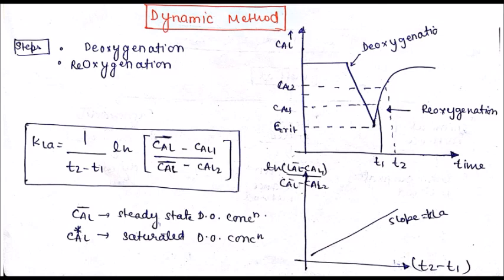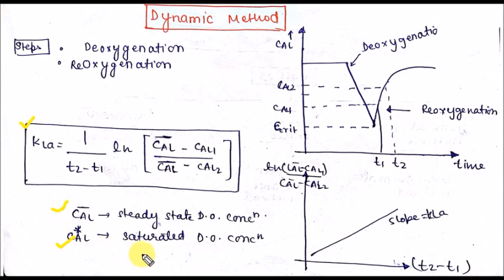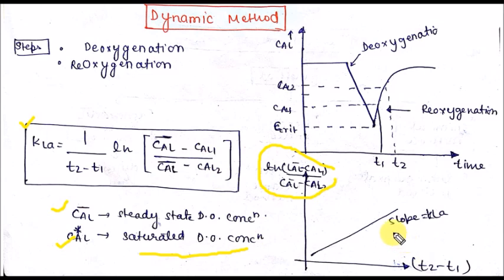The dynamic method is the most suitable method to calculate kLa. In this method we perform deoxygenation and reoxygenation processes and calculate kLa using the formula: (1/(t₂ minus t₁)) times ln(CL* minus CL₁), where CL* is the steady-state dissolved oxygen concentration and CL* is the saturated dissolved oxygen concentration. The kLa is determined from the slope of a plot of ln(CL) versus time.